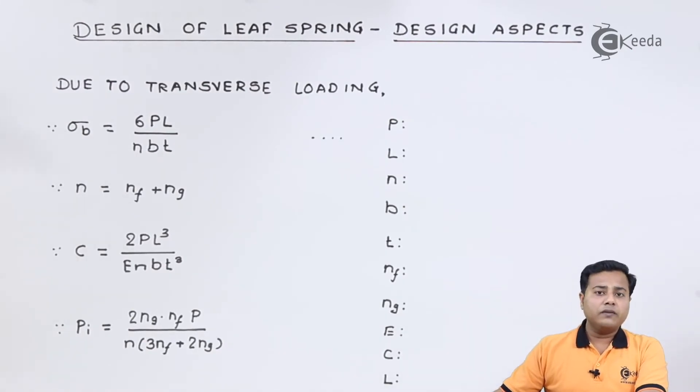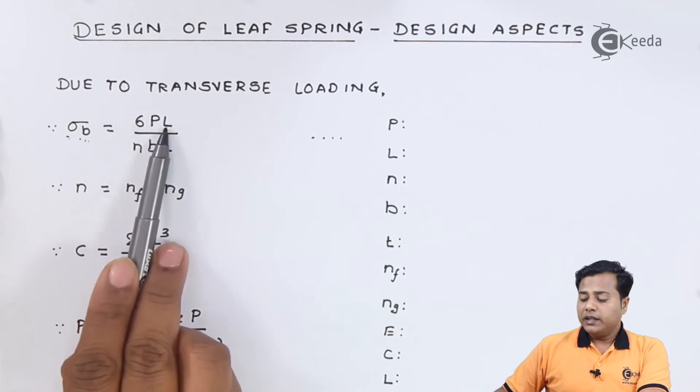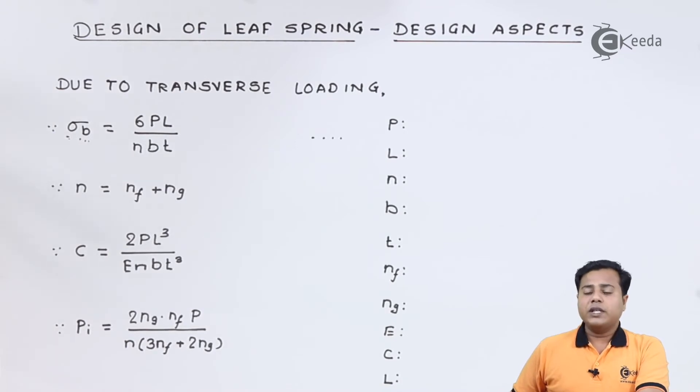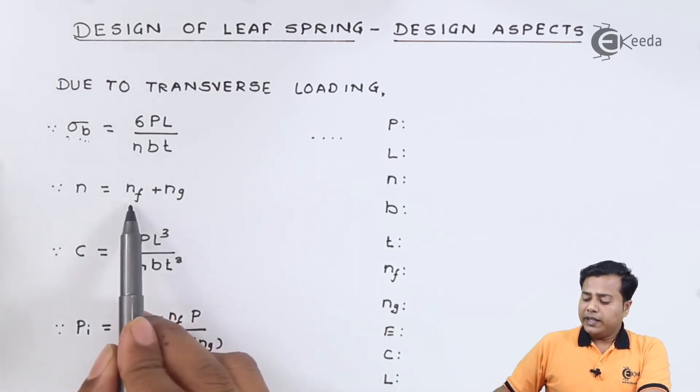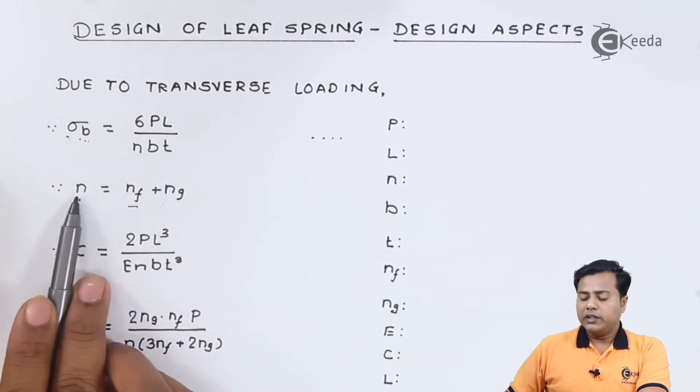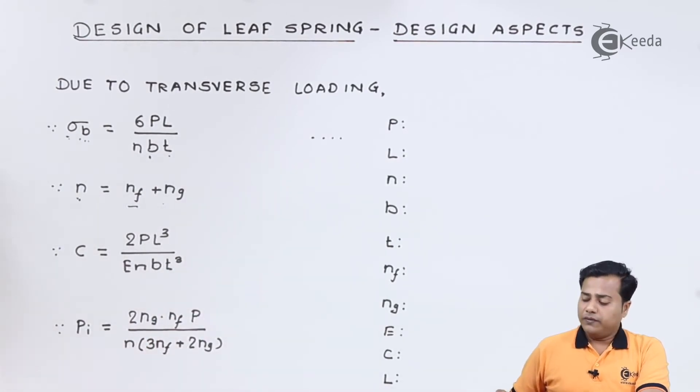So there are few formulae which we have segregated based on the given course. Of course you can find all these formulae in the book of design data. These are the four formulae which we are going to use for this particular numerical, and accordingly the terminologies are mentioned. This is the bending stress based on the load acting, the length, the number of leaves. The total number of leaves is of course the addition of graduated number of leaves, the master leaf, and the full length leaf. So in that case, the full length leaf plus graduated level leaves numbers are collected to find the total number of leaves.